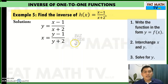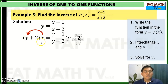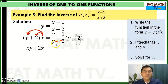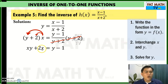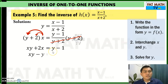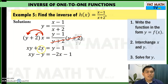To get rid of the denominator, multiply both sides by y plus 2. Distributing x: x times y gives xy, and 2 times x gives 2x. On the right side, y plus 2 cancels, leaving y minus 1. Since we are solving for y, put terms with y on one side and terms without y on the other. Put y on the left and 2x on the right — or you can put xy on the right and negative 1 on the left; you will still get the same answer.